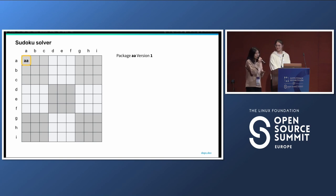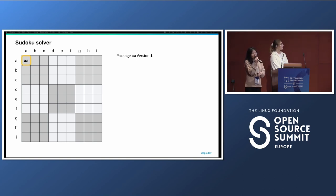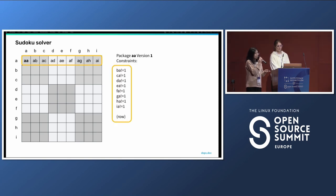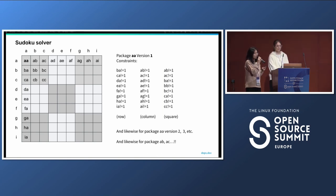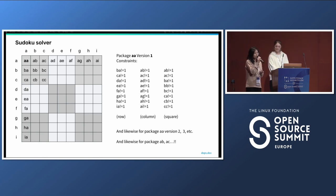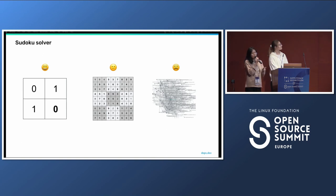The same principle works for the 9x9 Sudoku — it's just bigger with more constraints, but still the same constraint satisfaction problem. At Deps.dev we've had some fun with the fact that both dependency resolution and Sudoku are actually the same problem. Because we've re-implemented some resolvers bug-for-bug in Go, we've had to write unit tests for them. The 9x9 Sudoku is actually a test case in our codebase for our PyPI resolver — we constructed a test case with requirements on 81 packages with 9 possible versions each, and the resolver was able to solve it.